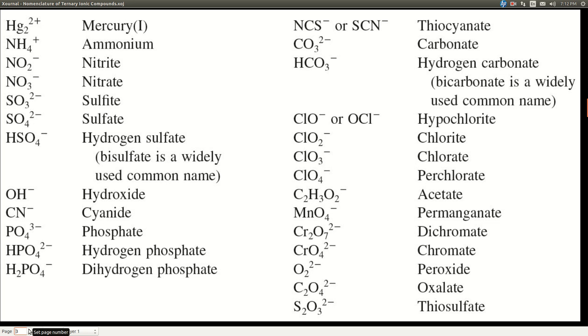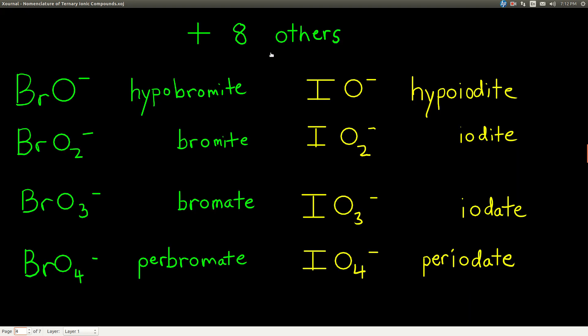There are some more that I'm going to ask you to memorize too. These eight others: hypobromite, bromite, bromate, perbromate, hypoiodite, iodite, iodate, and periodate. There's a pattern here that hopefully will help you remember them.